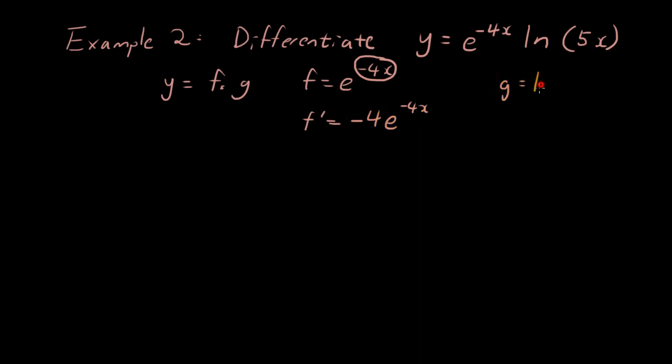Now you have g equals ln 5 x, g dash equals, so you're going to turn the ln function into 1 over the same thing in the bracket. And you're going to multiply by the derivative of the inside, which is 5. So the whole thing becomes 5 over 5 x, which is just 1 over x again, because 5 divided by 5 is 1.